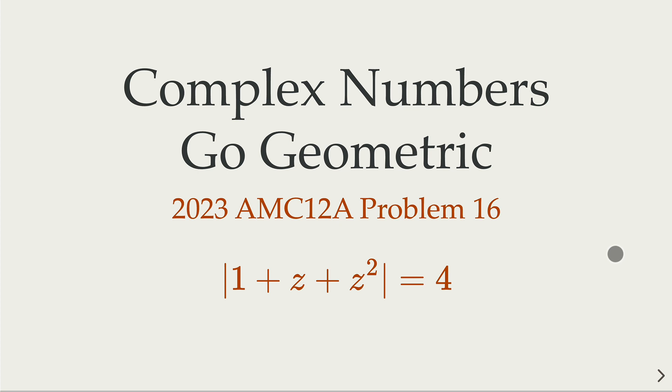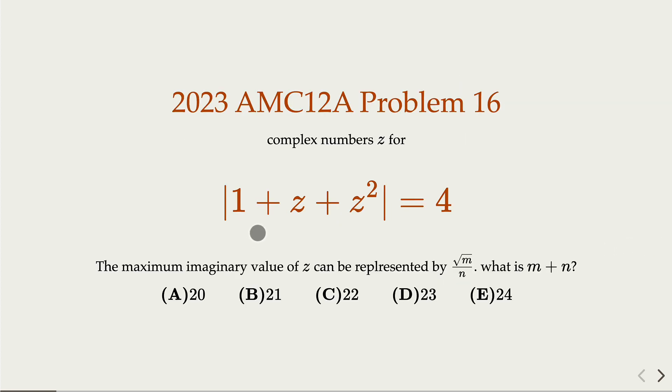In fact, the geometric interpretation is an important method in solving some complex number problems. So we're given that for z satisfy this condition, of course this is a modulus, what is the max imaginary part of z if it can be represented in square root of m over n, what is m plus n?